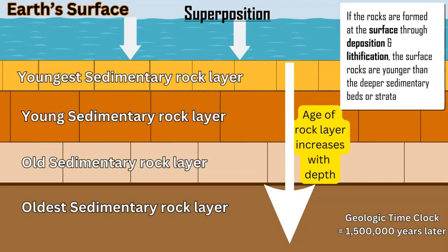One and a half million years later, we now have a fourth layer. This yellow sedimentary rock layer was deposited most recently, making it the youngest. Over time more and more rock layers are deposited as long as deposition is occurring at the surface through agents like water or wind transporting, dropping, and accumulating sediment.